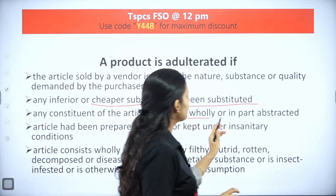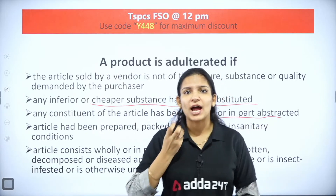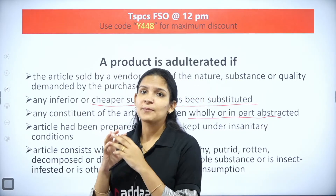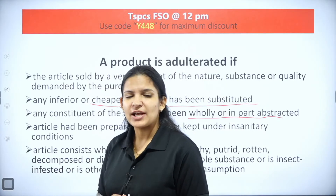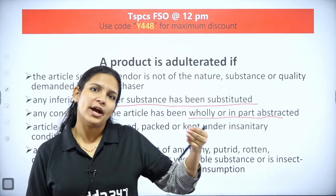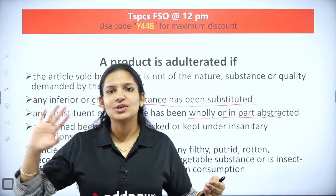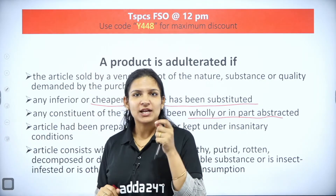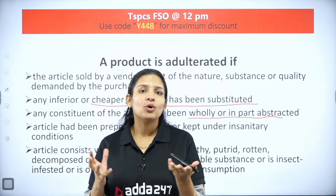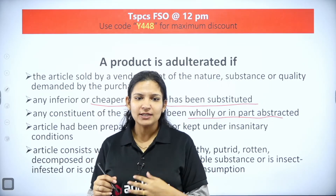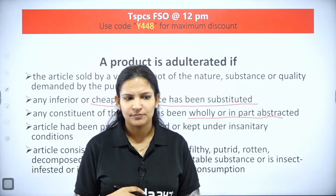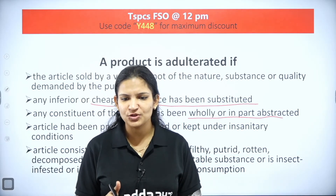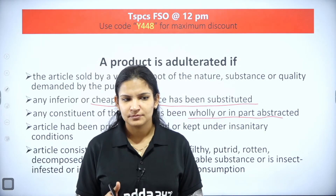The third condition is if any constituent of the article has been wholly or partially abstracted. For example, with spices - if you extract the essential oils from spices and then sell the spice, because those essential oils were the very soul of the spice, that extraction constitutes adulteration.